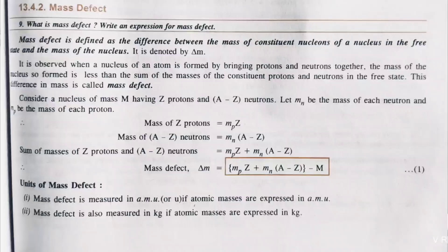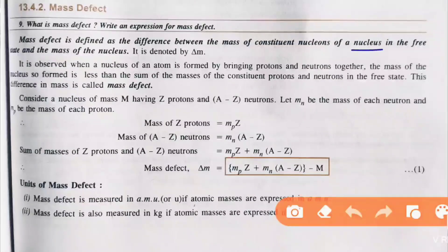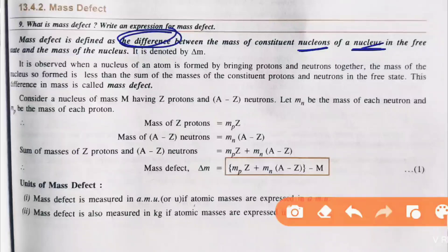Because this is a one or two marks question. Mass defect is defined as the difference between the mass of constituent nucleons of the nucleus in the free state and the mass of the nucleus. This is denoted by delta m (Δm).